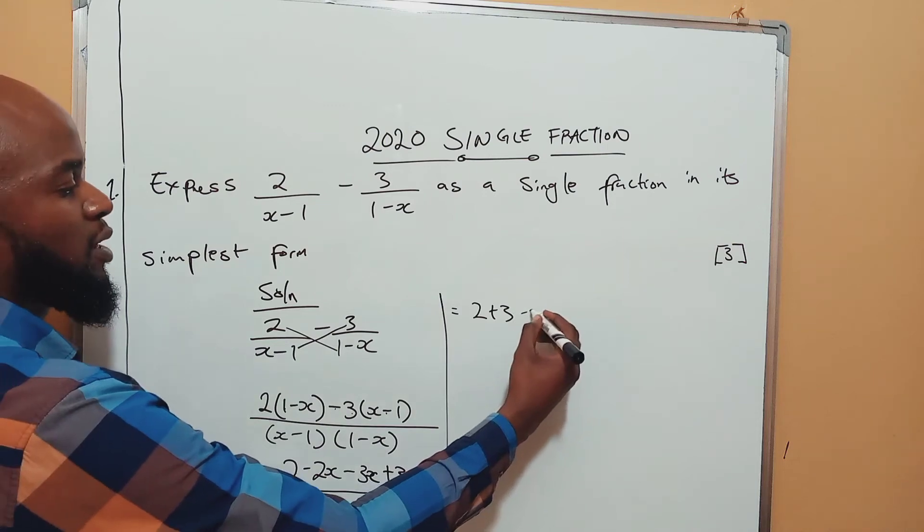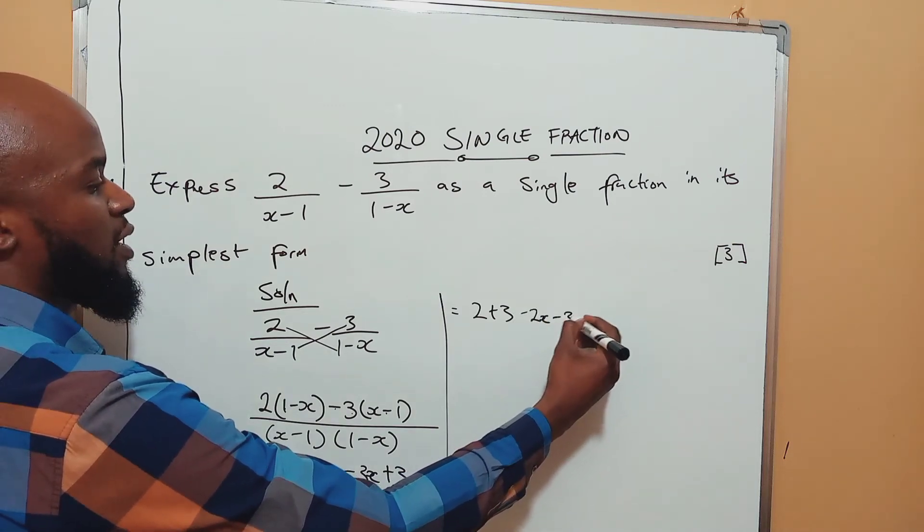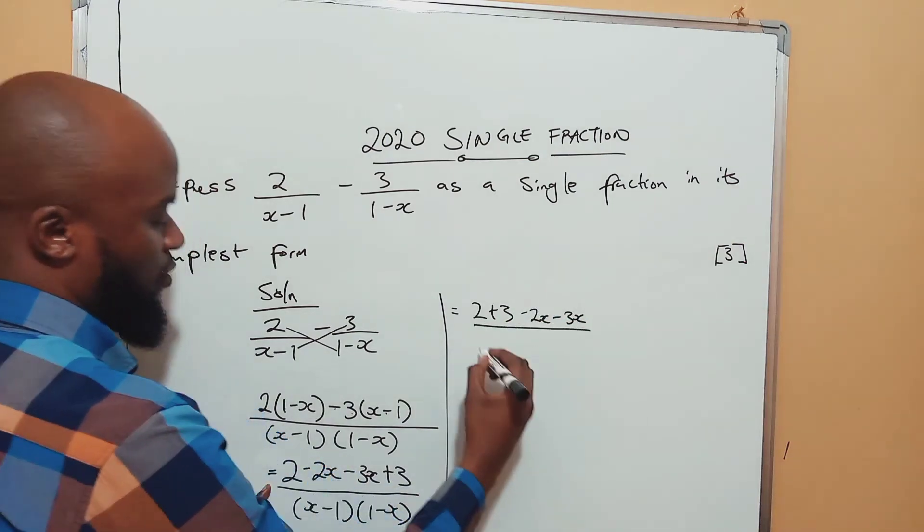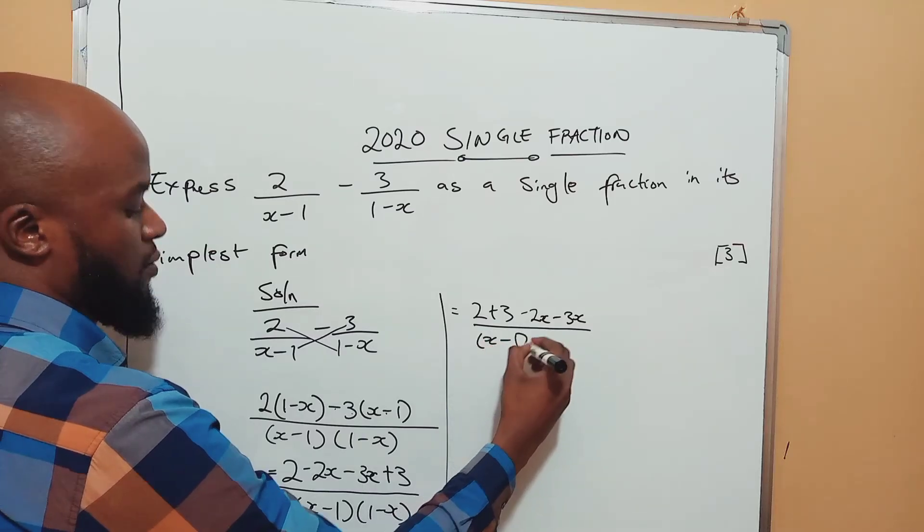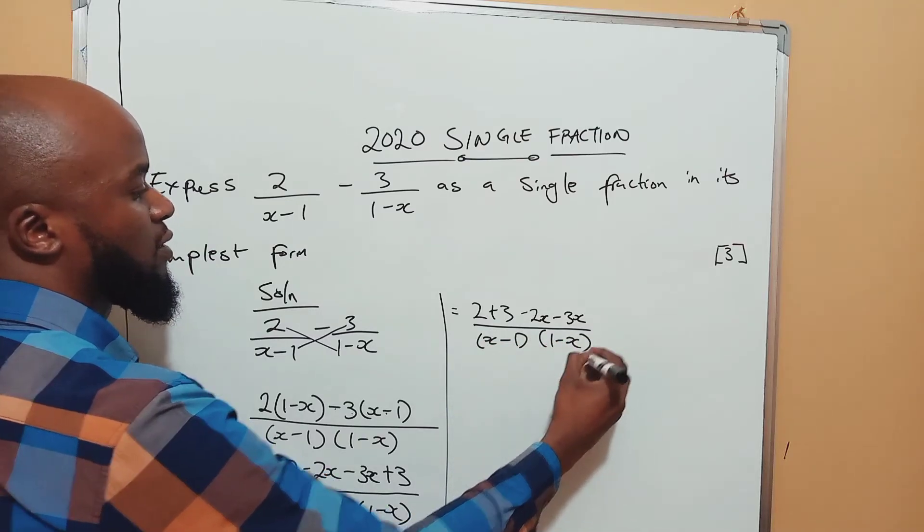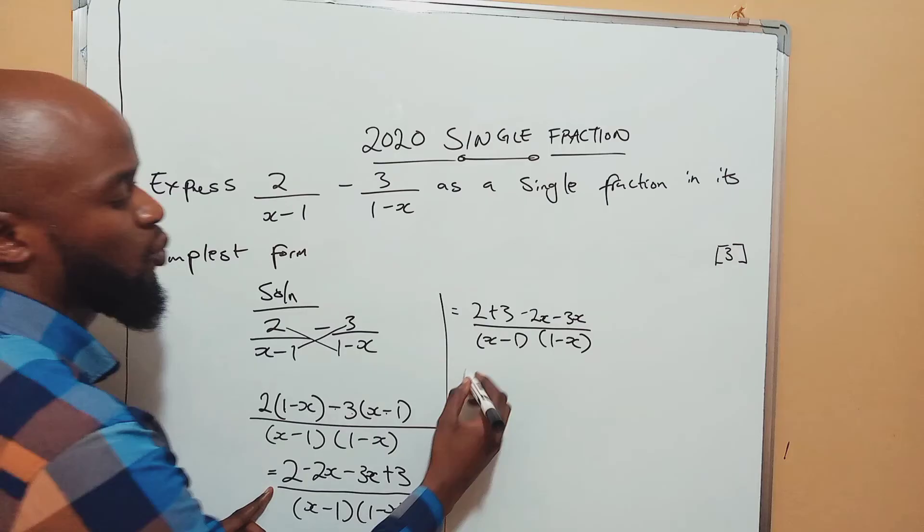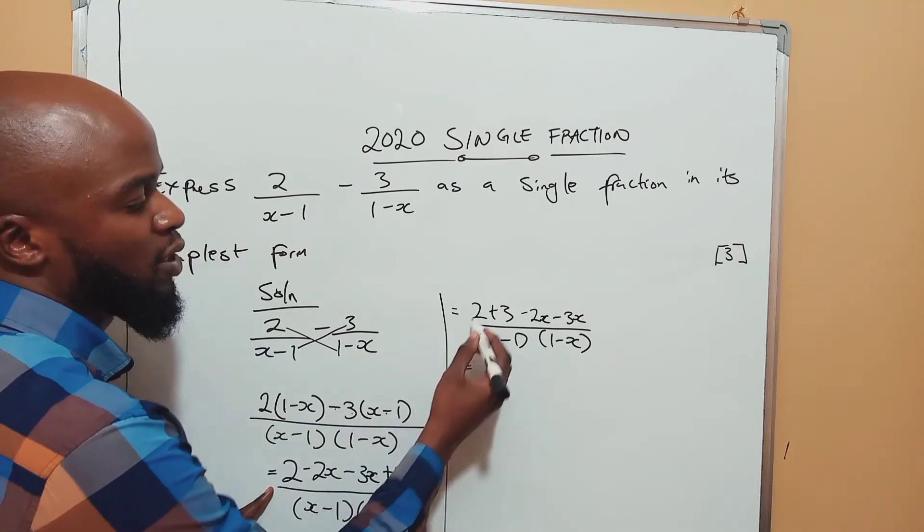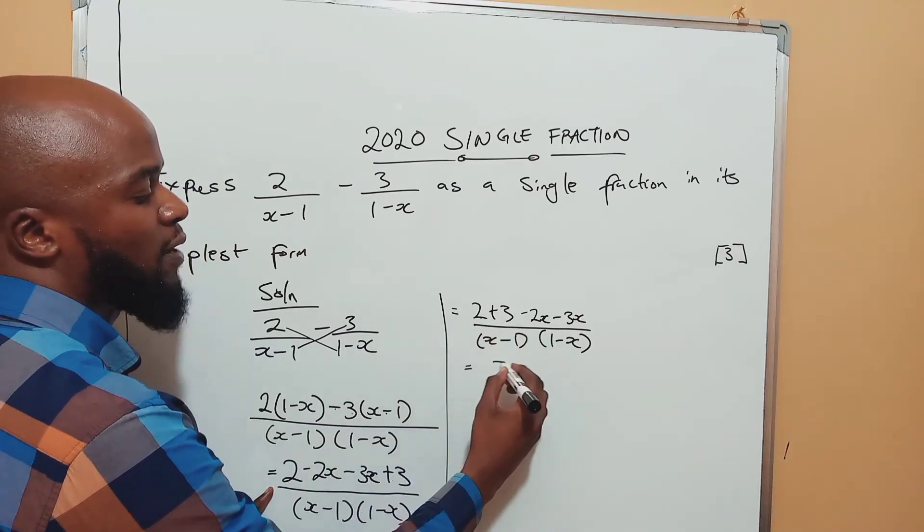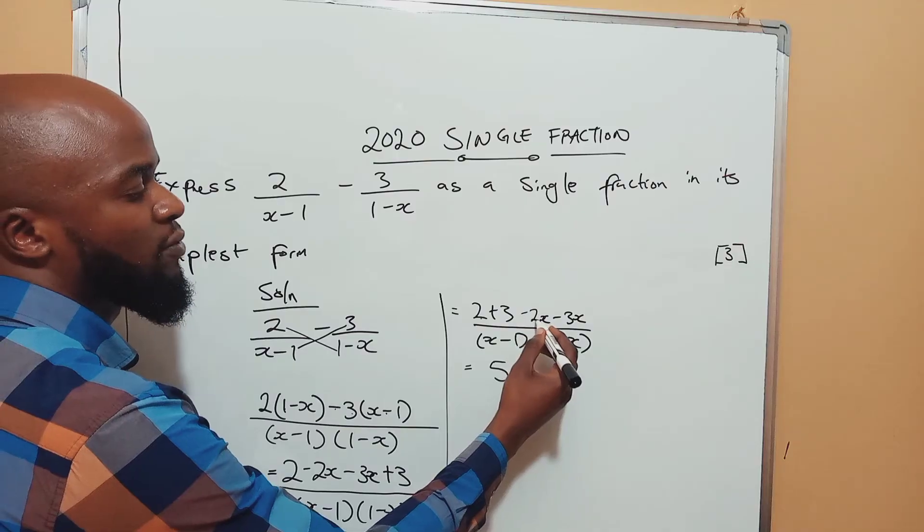So here you are just moving the numbers: minus 2x minus 3x over x minus 1, 1 minus x.